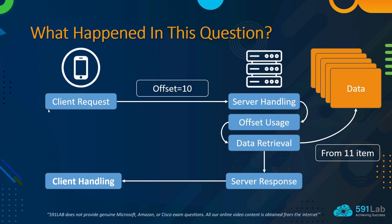In this scenario, the client wants to send a GET request to the server to collect data about devices. The client sends a request to the server specifying parameters such as the endpoint URL, HTTP method GET, and possibly query parameters including the offset — for example, offset equals 10. The next step is server handling. Upon receiving the request, the server's API endpoint handler processes the request. When the offset is provided, it indicates the position within the collection from which the client wants to start retrieving data.